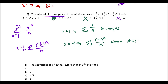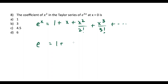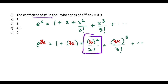Question eight: you need to know the Maclaurin series for e^x, which is 1 + x + x²/2! + x³/3! + ... For e^(3x), replace every x with 3x. We only care about the x² term: (3x)²/2! = 9x²/2 = 4.5x². So the coefficient of x² is choice C, 4.5.